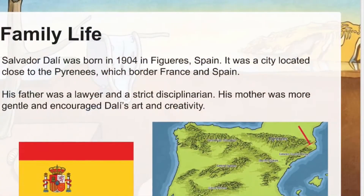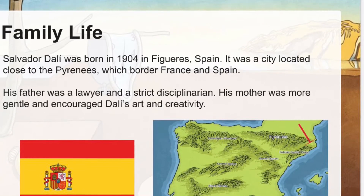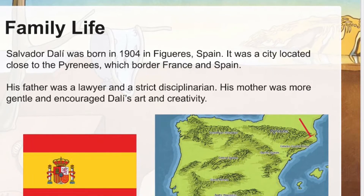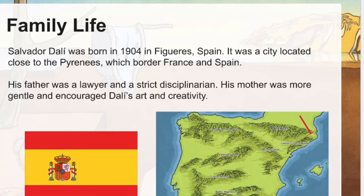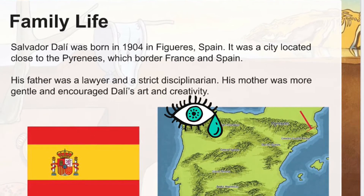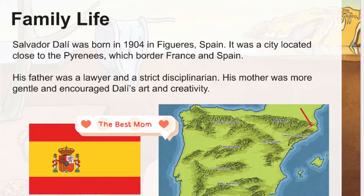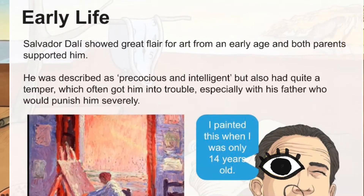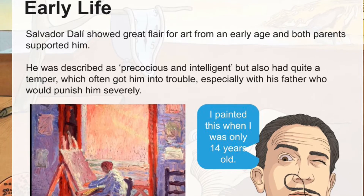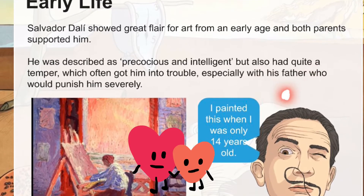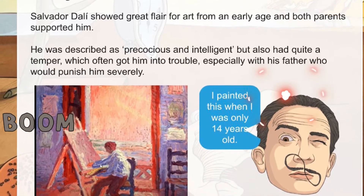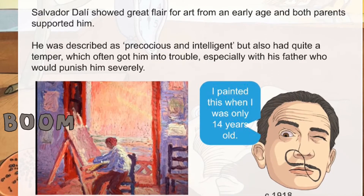Let's learn a little bit about Dali's life. He was born in 1904 in Figueres, Spain, a city located close to the Pyrenees near the border of Spain and France. His father was a lawyer and a very strict disciplinarian, but his mother was more gentle and encouraging of Dali's art and creativity. Dali showed a great flair for art from a very early age, and actually both parents supported him. He was described as precocious and intelligent, but also had quite a temper, which often got him in trouble, especially with his father, who would punish him severely.